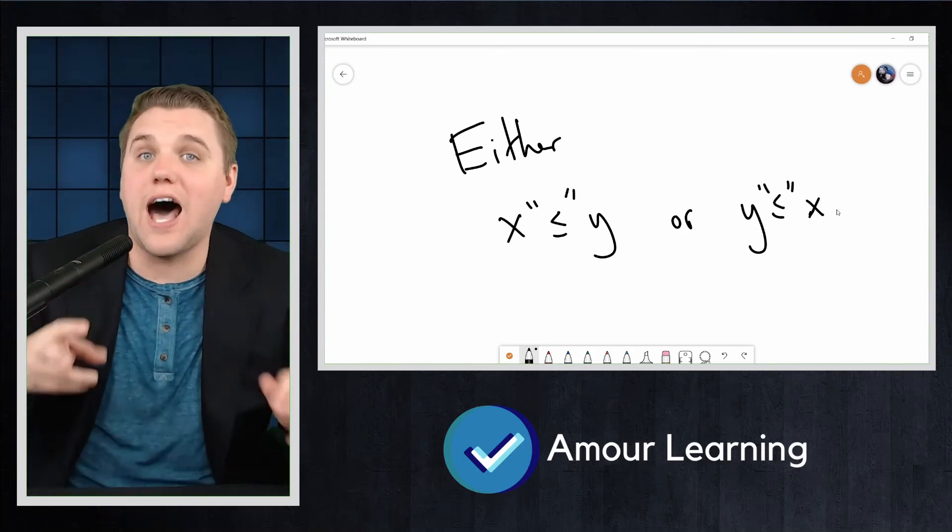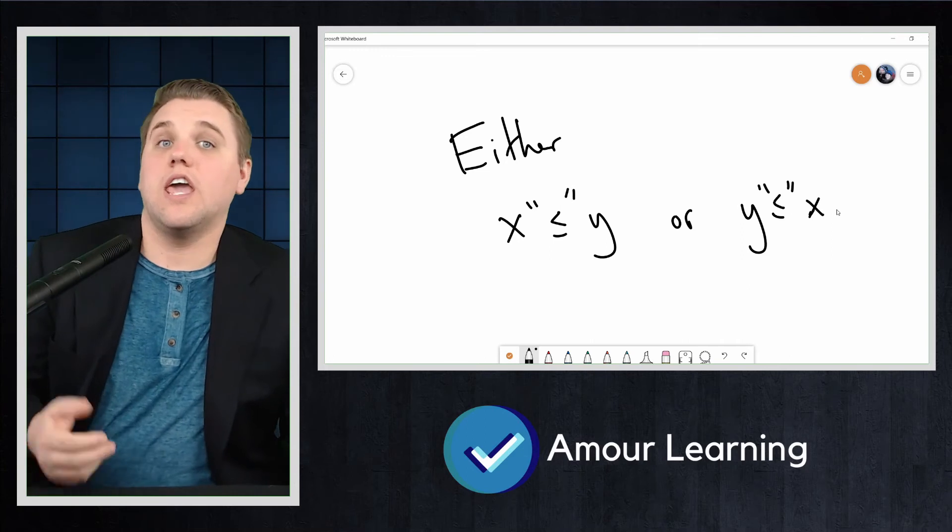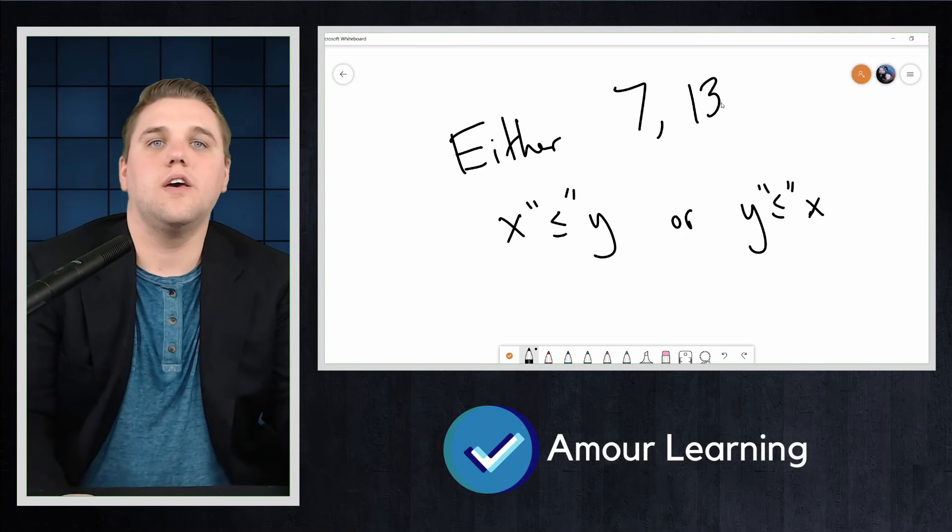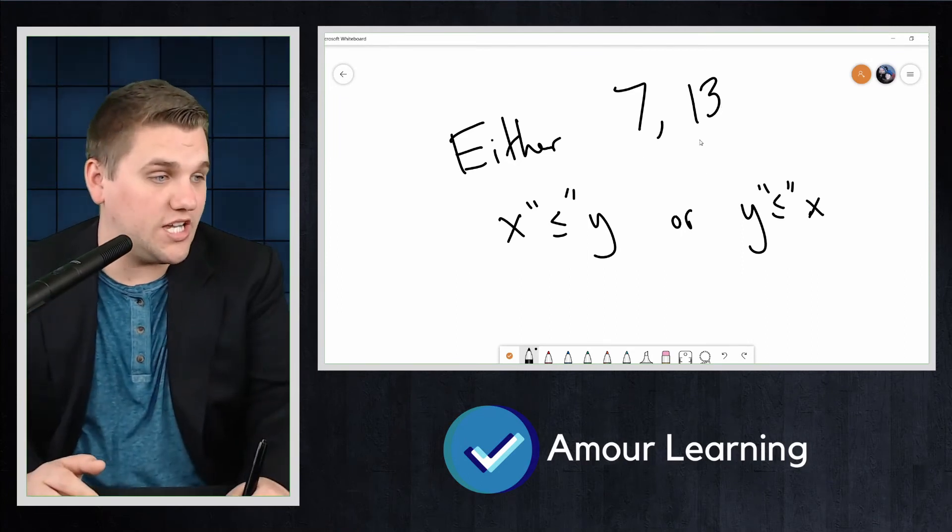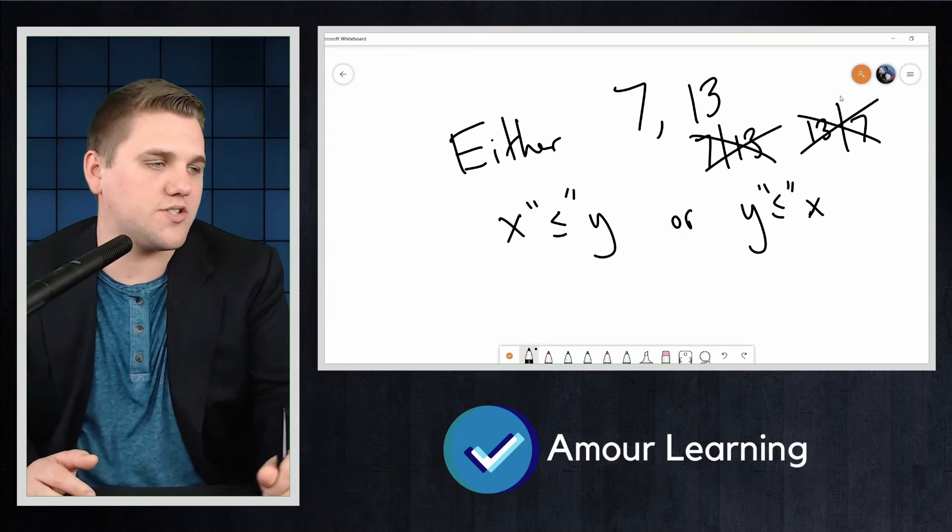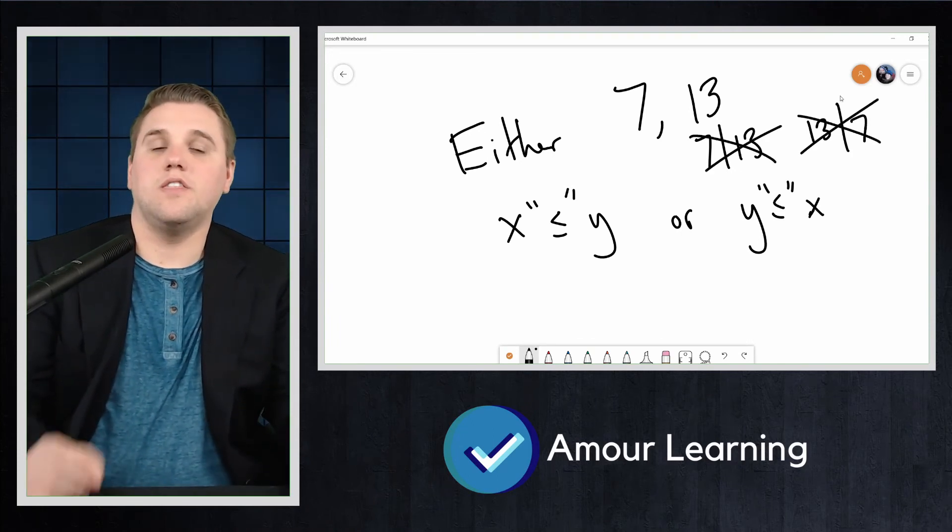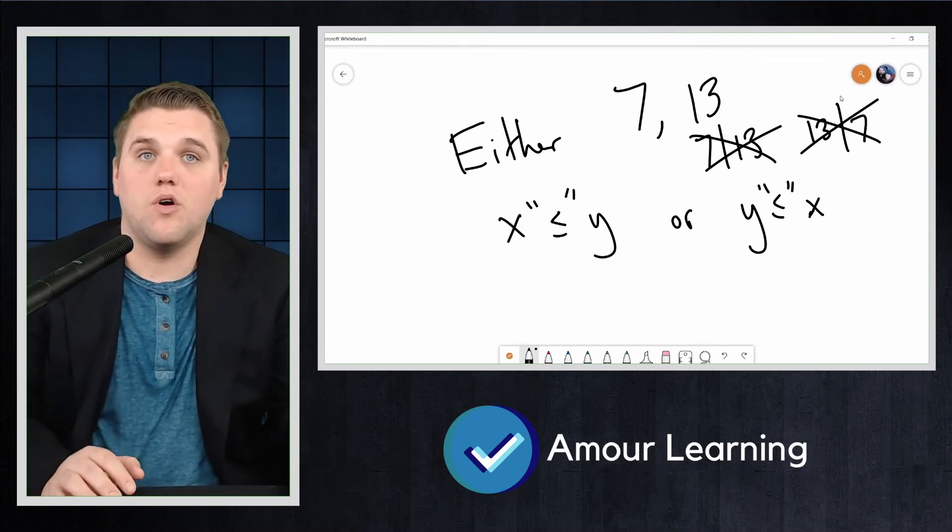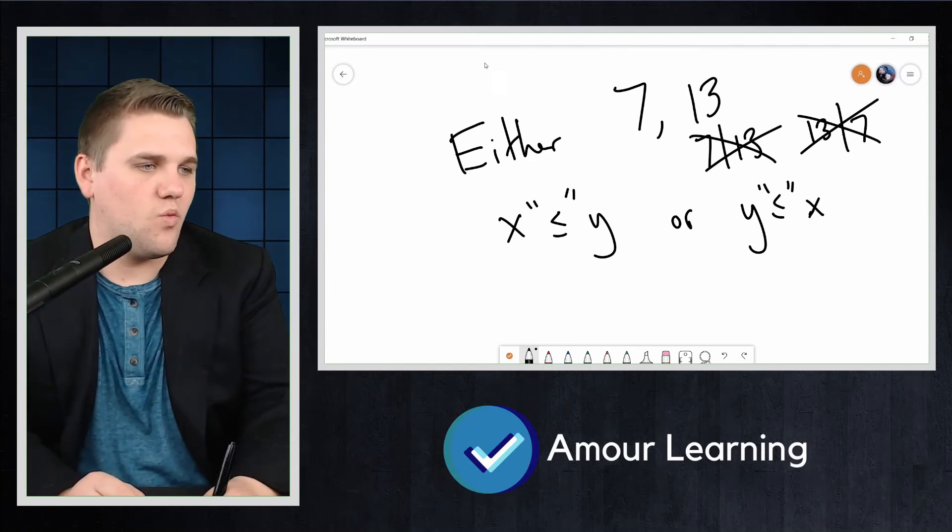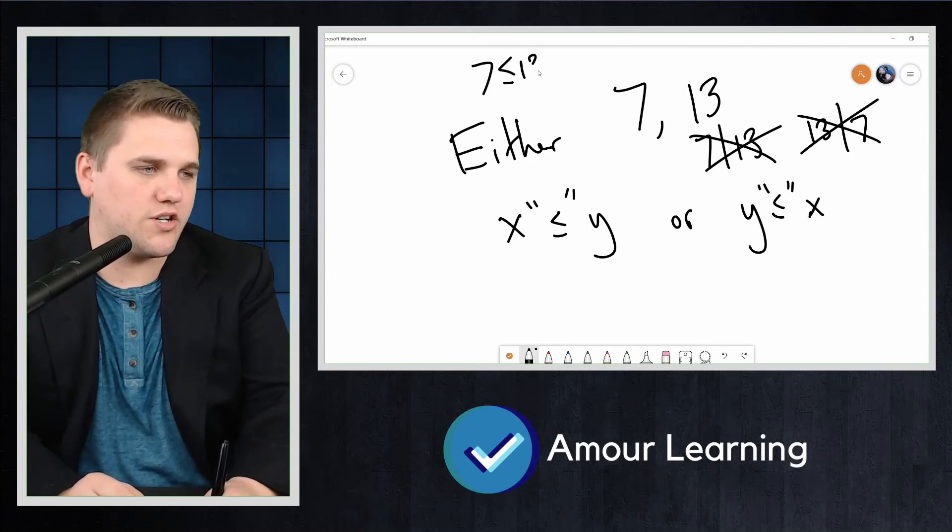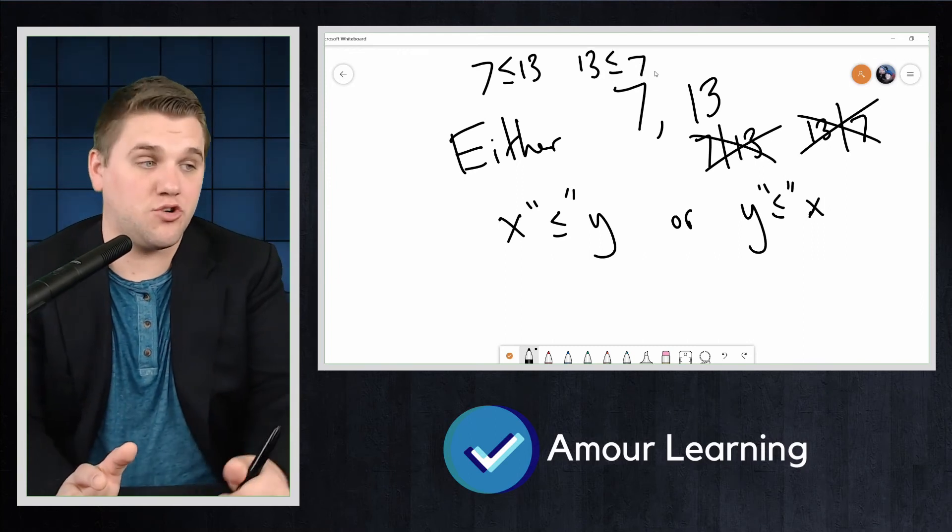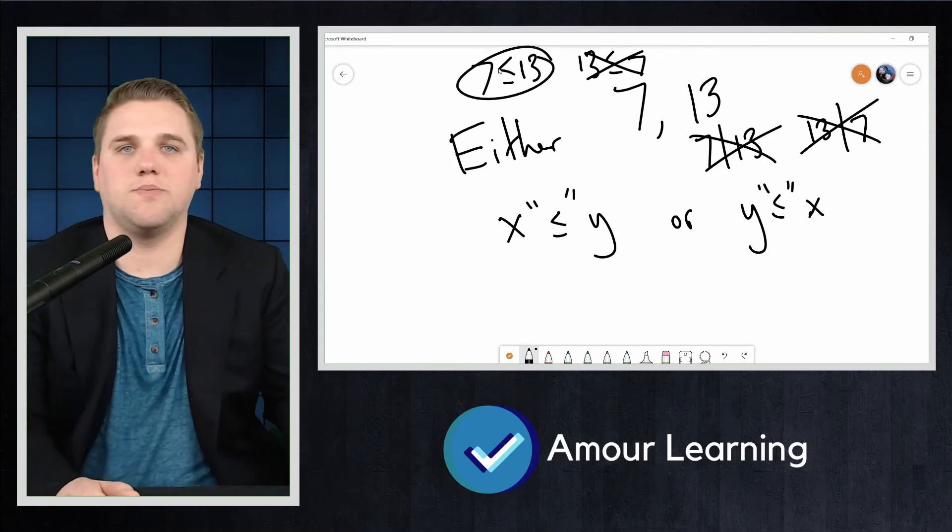Partial orderings do not necessarily have to fulfill this requirement. Take, for example, the divides partial ordering. If you take the elements 7 and 13, then both 7 divides 13 and 13 divides 7 are both false. These two elements are not comparable. Whereas under the usual partial ordering, less than or equal to, we might say 7 is less than or equal to 13 or 13 is less than or equal to 7. One of those has to be true, and in fact, one of those is true, that one specifically.